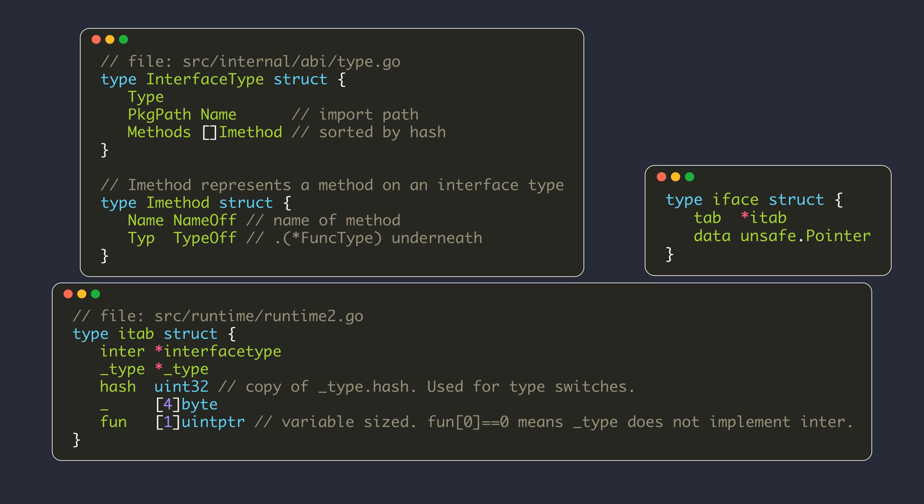The method table of the interface table is populated with function pointers by looking at the method table of the concrete type. Note that the method table inside the interface table only stores the methods that the interface specifies, while the method table of the concrete type contains all of its methods. In our example, the method table for the concrete type person contains three methods, while the method table for the interface type user only contains two methods. Each interface table is only computed once and cached in a global map for runtime performance.